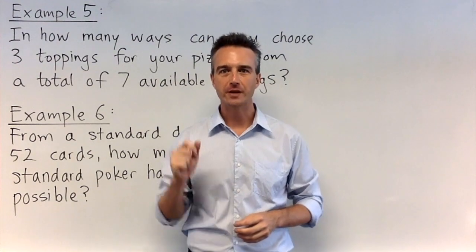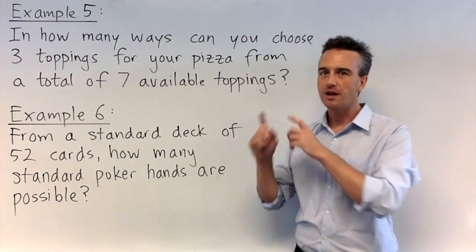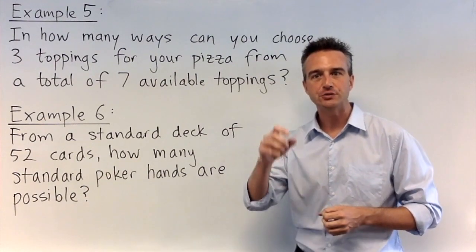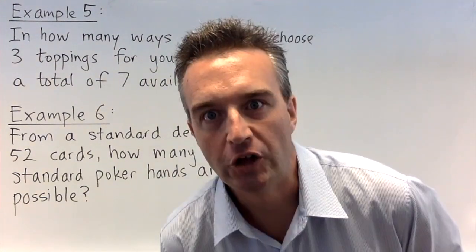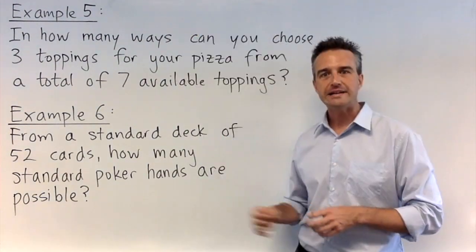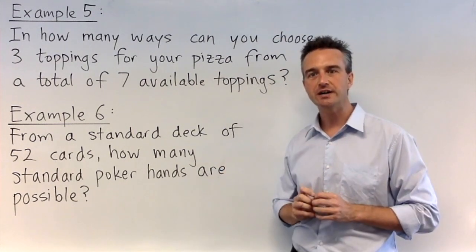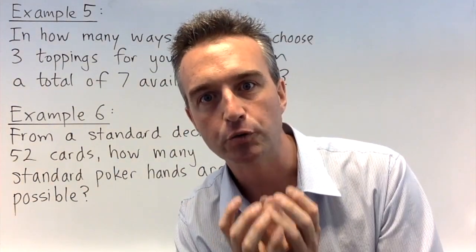I hope you're in the mood for a couple more questions because now it's your turn. Please try examples five and six. In example five, you've got seven pizza toppings to choose from, but you're only allowed three. How many ways can you choose your toppings? Yummy pizza. In example six, a standard deck of cards has 52 cards. How many poker hands are possible? A standard poker hand is a simple grouping of five cards. You may even use your calculator for example six. I'm so nice.